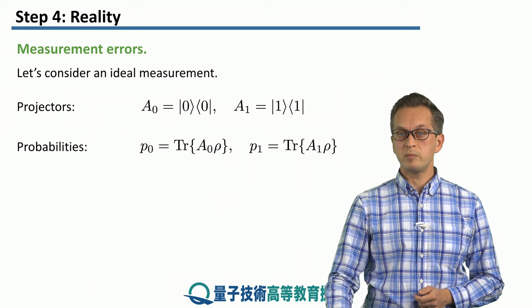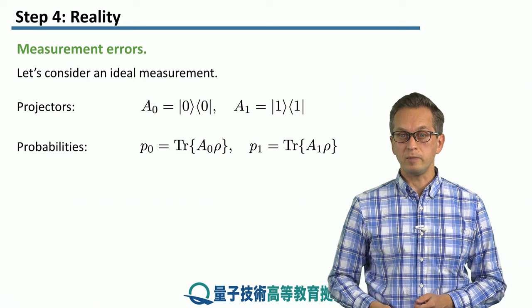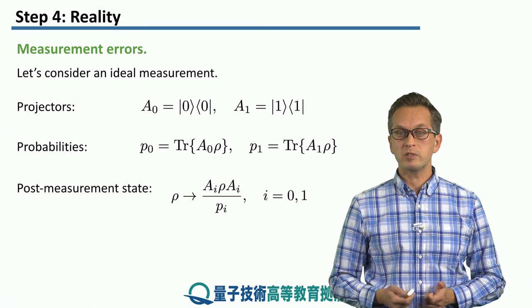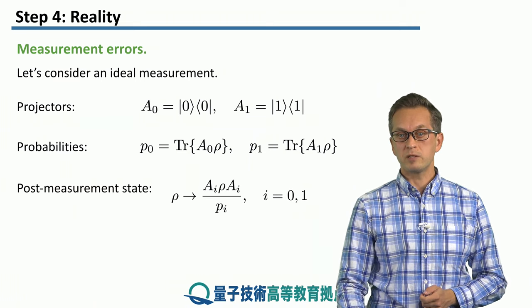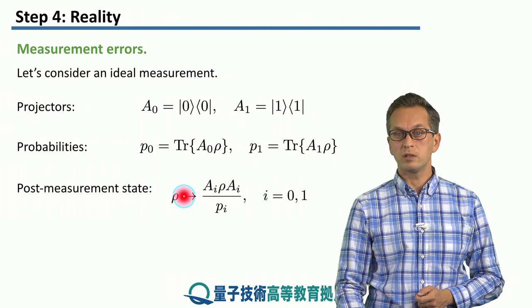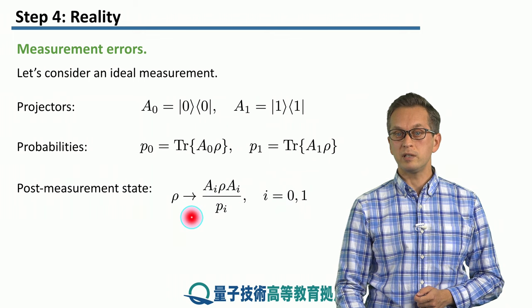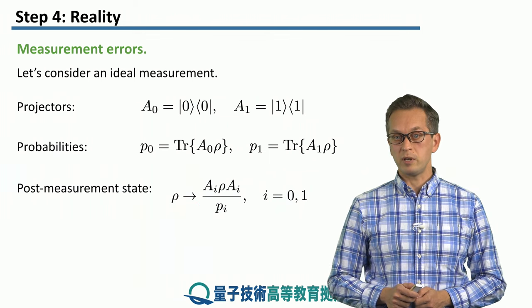And similarly for our probability of our measurement outcome being state one. And the post-measurement state is given by this following. We apply the two projectors on our initial state rho, and we renormalize by the probability of obtaining that measurement outcome.